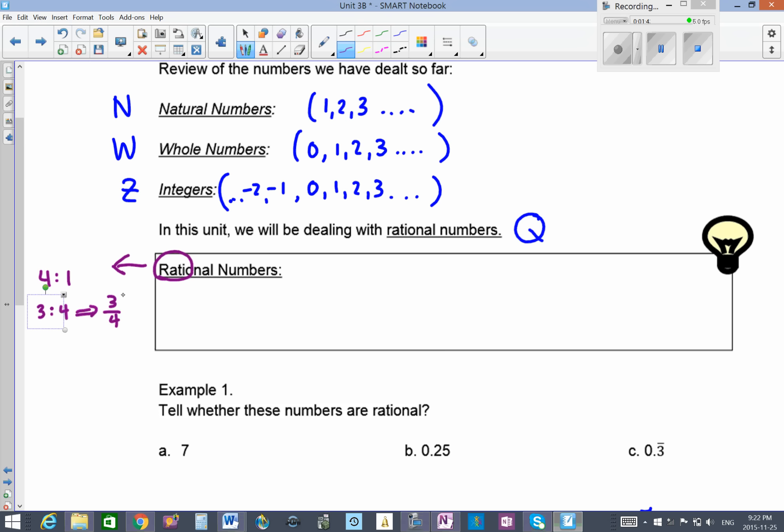We also know that ratios can be written as fractions, like 3 over 4. Fractions can be written as decimals, and decimals can be written as percents. So we're not just going to be doing fractions in this unit; we're also going to be dealing with decimals and percents.